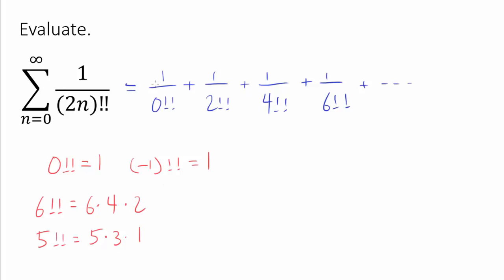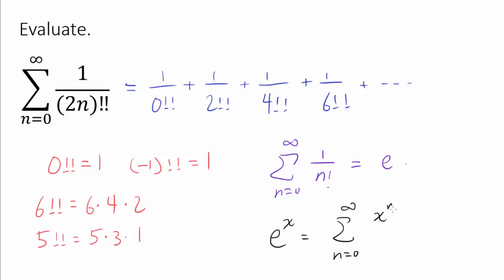So what is this series going to converge to? We know how to evaluate the sum from n equals 0 to infinity of 1 over n factorial — not double factorial — just one factorial sign, and we know that equals e. By definition, many people define e to be the sum of that infinite series. We also know that e to the x is the sum from n equals 0 to infinity of x to the nth over n factorial. When x is 1, you're summing 1 over n factorial, which gives e. This series looks similar to what we have, so maybe it will help us later on.